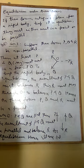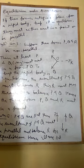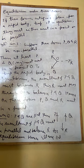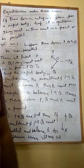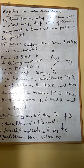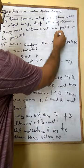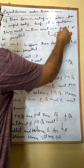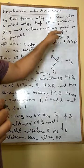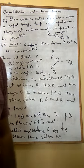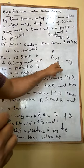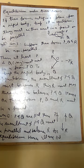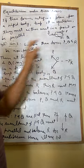The next topic is equilibrium under three forces. If three forces acting in one plane upon a rigid body keep it in equilibrium, they must either meet in a point or be parallel. Suppose we have a rigid body and three forces P, Q, R are acting on it. If the rigid body is in equilibrium, these three forces either meet in a point as in case one, or they will be parallel as in case two.